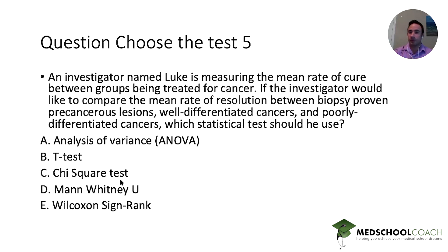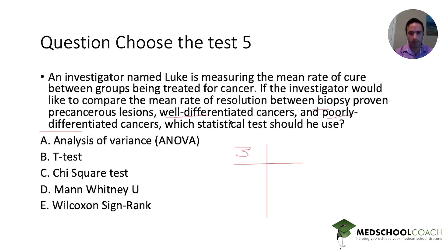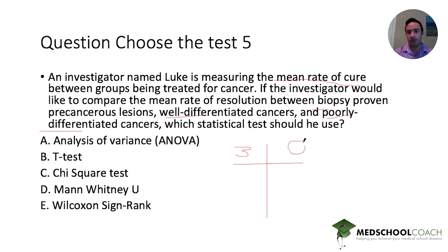Last question: an investigator is measuring the mean cure rate between two groups treated for cancer. The investigator would like to compare the mean rate of resolution between biopsy-proven pre-cancerous lesions, well-differentiated cancers, and poorly differentiated cancers. Which statistical test should be used? We have three groups, and we're trying to identify the mean rate of cure. The rate of cure — did it resolve? Is it cured or not? So this is qualitative data.